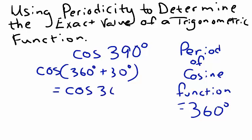This is our reference angle, cosine of 30 degrees. The exact value of cosine of 30 degrees, if you recall the unit circle, is square root 3 over 2. So, cosine of 390 degrees equals square root 3 over 2.